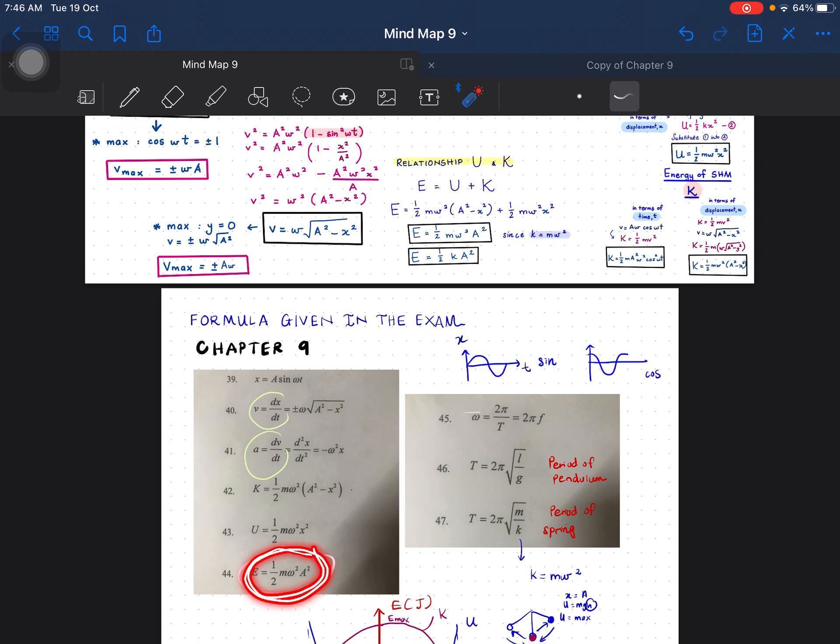In the exam, it will give you this formula, total energy. So you have to be careful. Sometimes the question doesn't give you the value of mass and omega. I mean omega dia akan kasi. Mass dia akan tak kasi. Dia kasi nilai K.